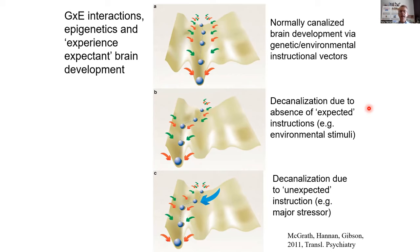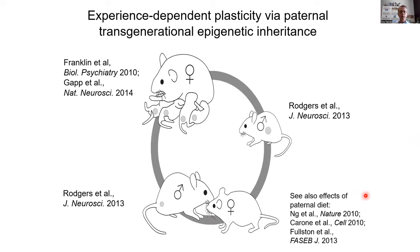Normally canalized brain development occurs via genetic and environmental instructional vectors. However, decanalization can occur due to the absence of expected instructions or environmental stimuli — in utero or postnatally — or due to factors that your parents were exposed to. These absences of expected instructions might relate to shifts in global populations: environmental factors like diet, levels of physical activity and sedentary behavior, and levels of chronic stress. Decanalization could also occur due to unexpected instructions like major stressors in utero — relevant to autism and schizophrenia — or adolescent and postnatal stressors particularly relevant to schizophrenia.